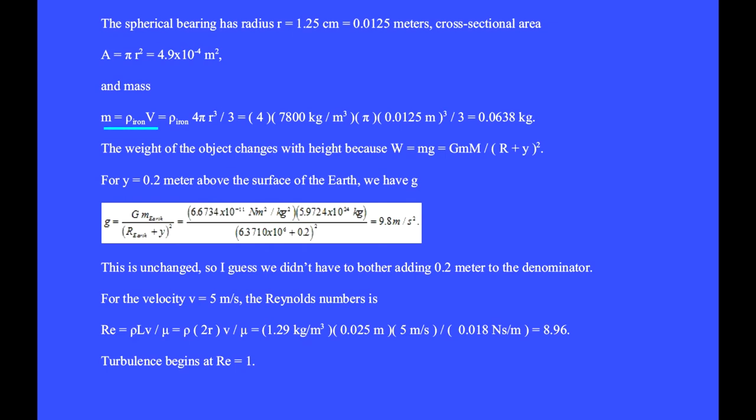And mass m equals the density of iron times the volume of the bearing equals the density of iron times 4 thirds pi r cubed and we get 0.0638 kilogram.